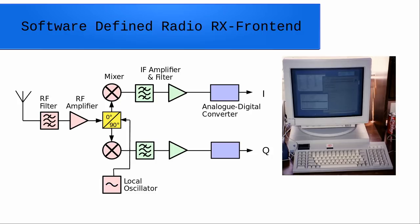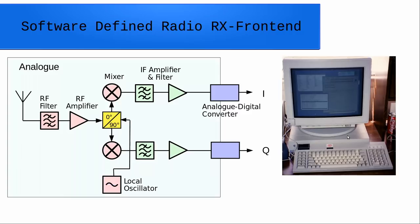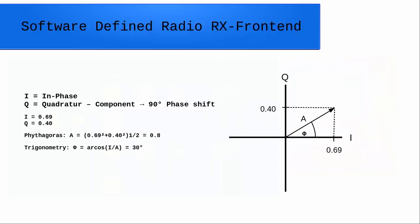After some filtering and amplification we have an IQ mixer, which actually consists of two mixers — the local oscillator signal is shifted by 90 degrees to the lower part. Then again some filtering, amplification, and then we get the analog-to-digital converters to produce our IQ signal for the computer for decoding in software. We still have a big analog part — most of the front end is still analog, and the digital part is only after the analog-to-digital converter in a classical SDR front end.